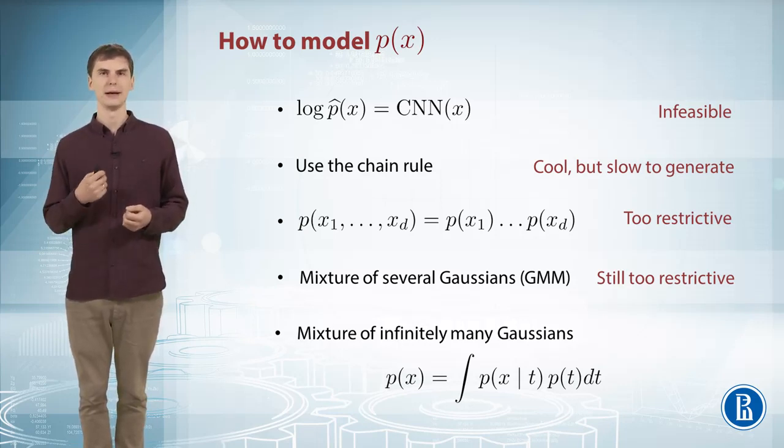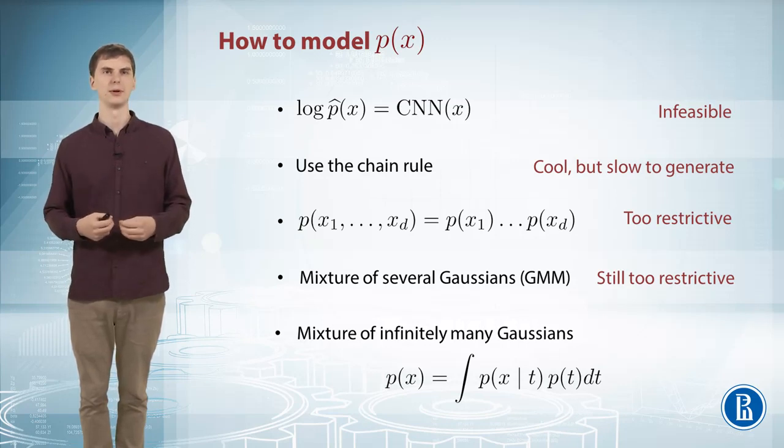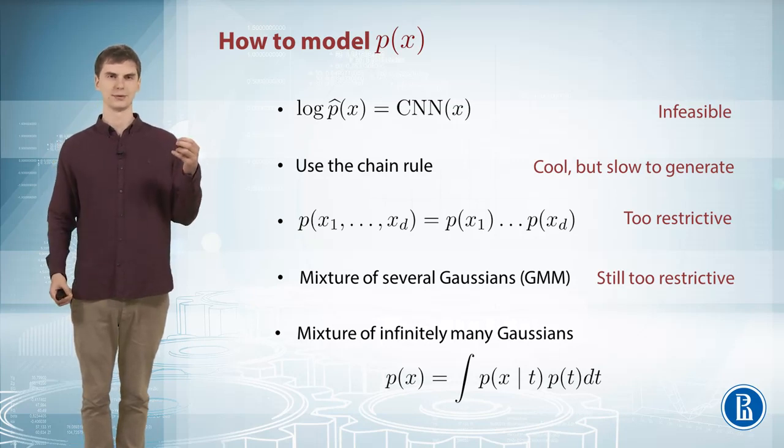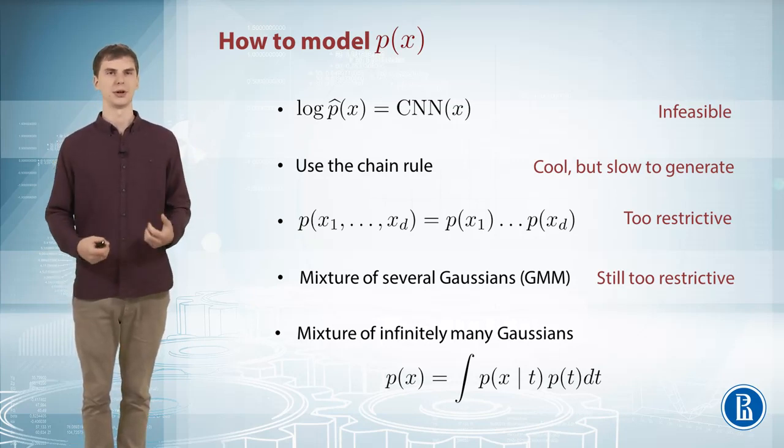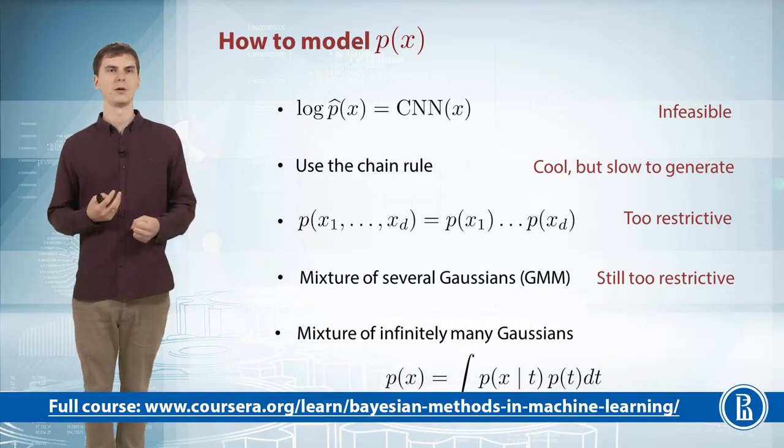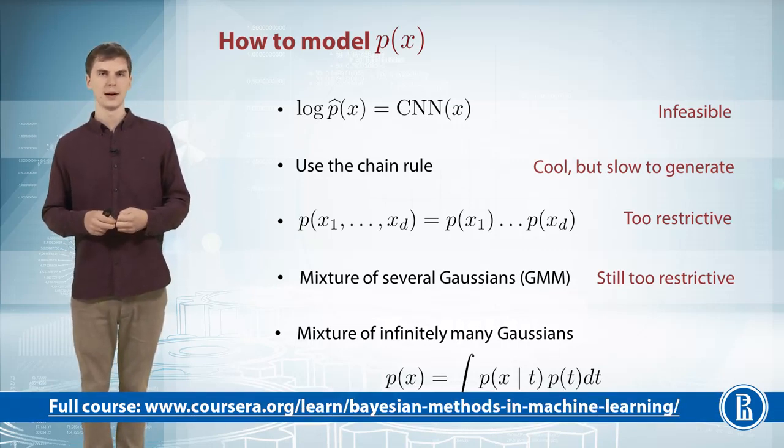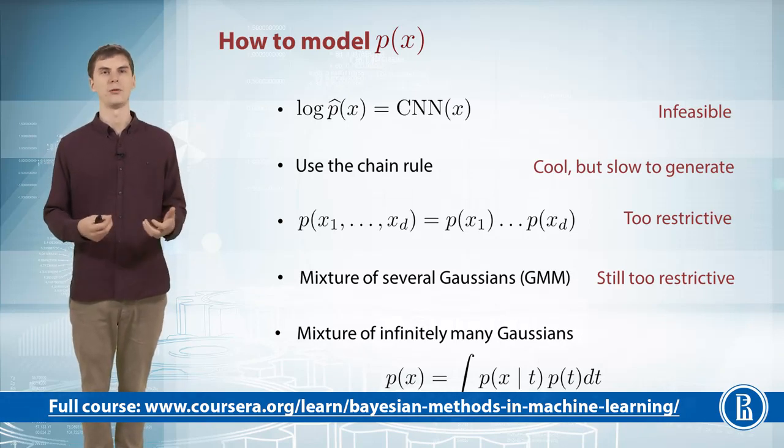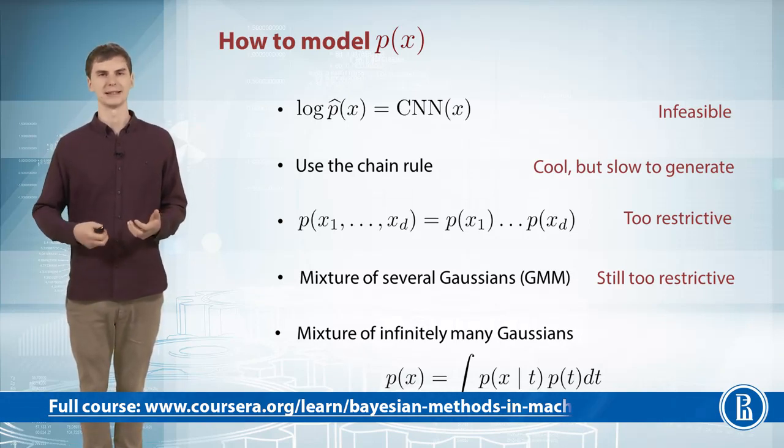So we kind of have a mixture of infinitely many Gaussians. For each value of t there is one Gaussian and we mix them with weights. Note that even if the Gaussians are factorized, so they have independent components for each dimension, the mixture is not. This is a more powerful model than Gaussian mixture model. We'll discuss in the next videos how we can make it even more powerful by using neural networks inside this model.